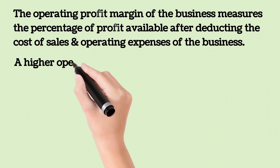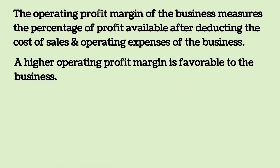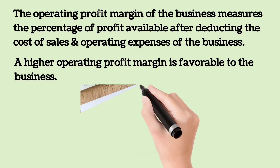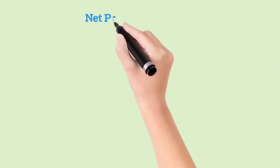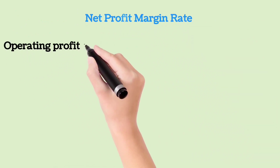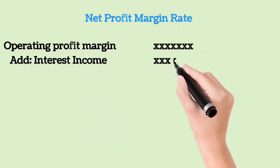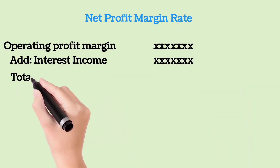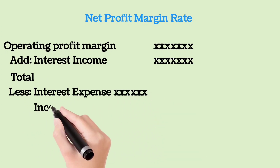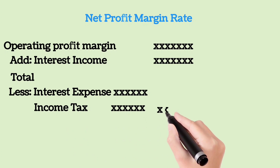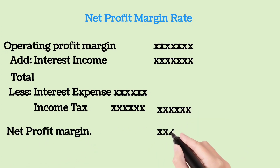A higher Operating Profit Margin is favorable to the business. Net Profit Margin Rate: the formula is Operating Profit Margin plus Interest Income, less Interest Expense and Income Tax, equals Net Profit Margin.